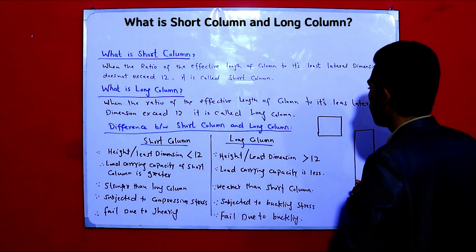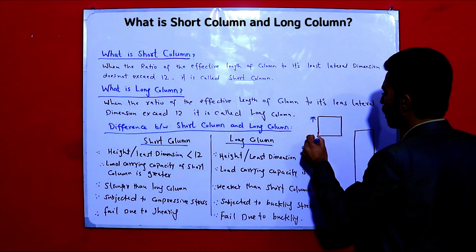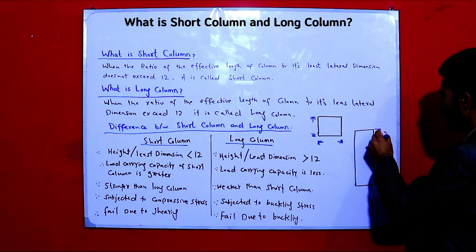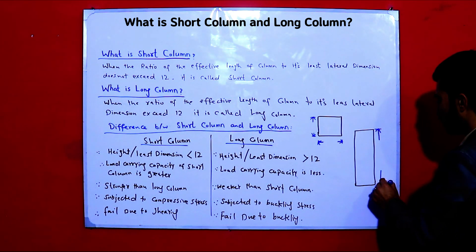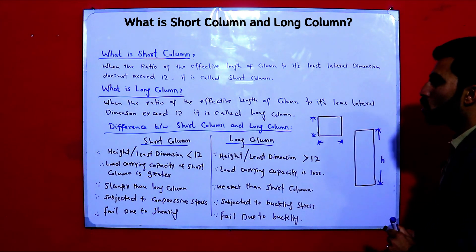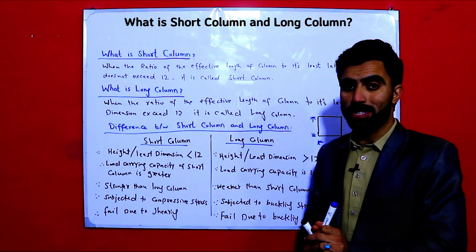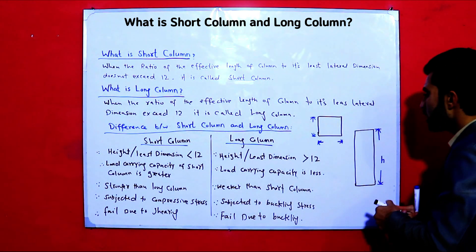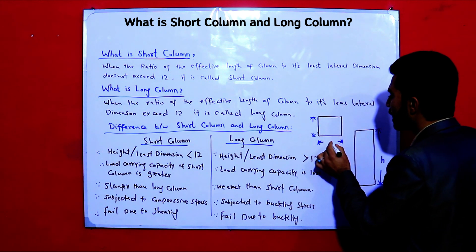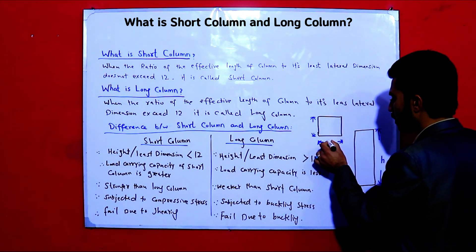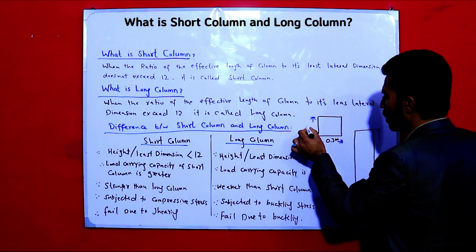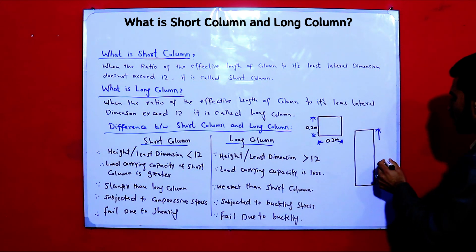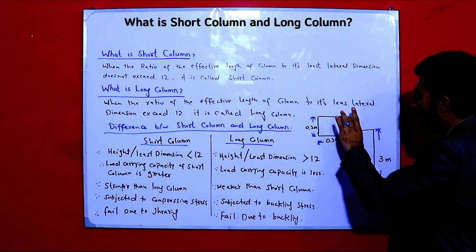We can consider the dimensions for a column from the top view, as you can see here. This is the height of the column. To understand what makes a column long or short, consider these dimensions: for example, this side is 0.3 meters, this side is 0.2 meters, and the height of the column is, for example, 3 meters. So is this a long column or a short column?